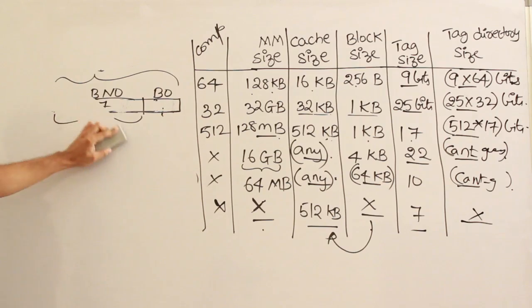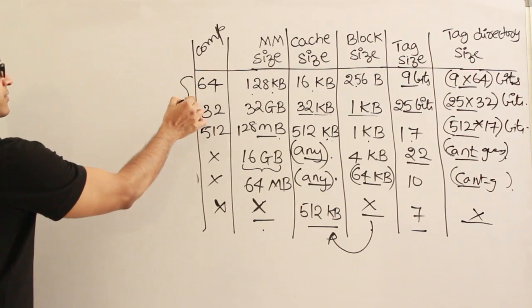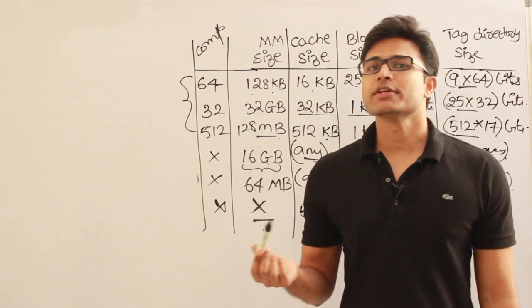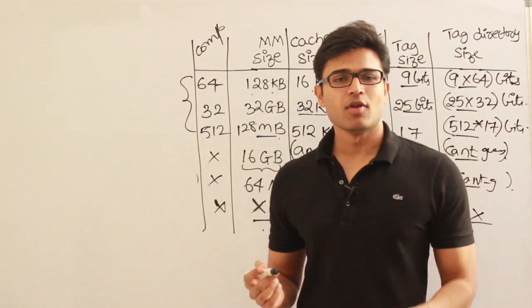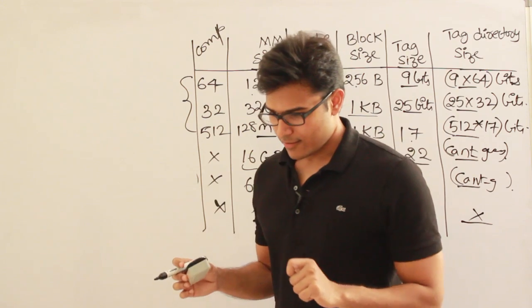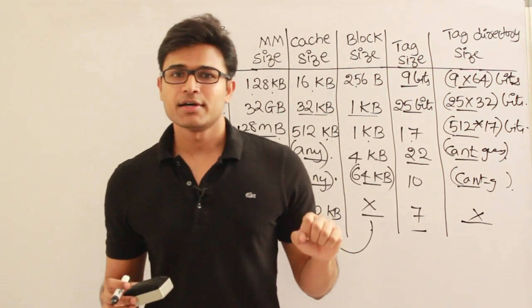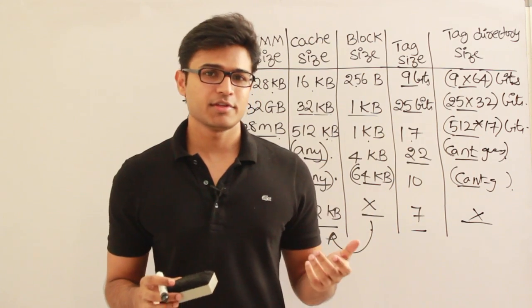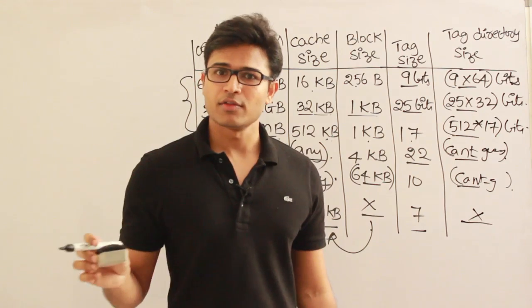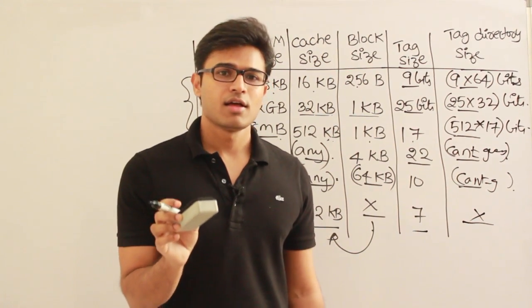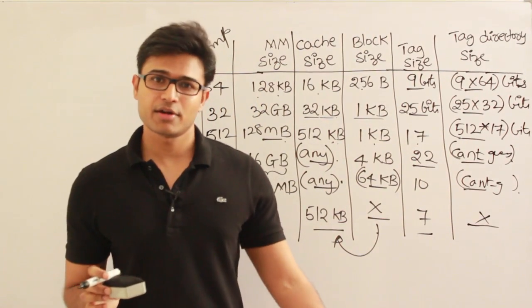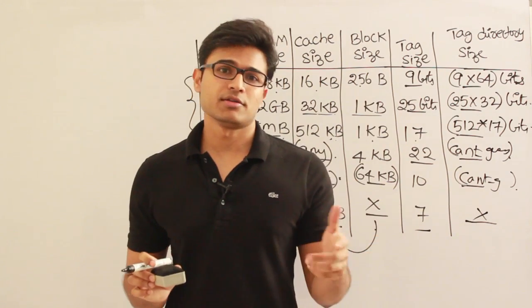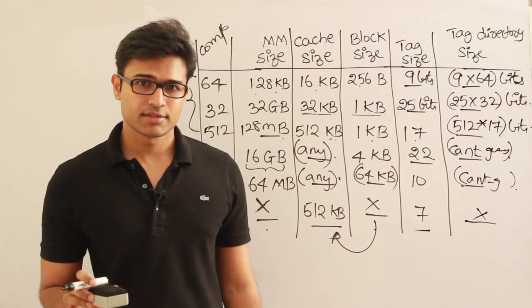To summarize: direct mapping is too restrictive — every main memory block must go to one specific cache line. Associative mapping gives complete freedom, but the number of comparators becomes very high. In modern computers with 512 or more cache lines, having 512 comparators on one chip alongside the CPU makes associative mapping very costly.